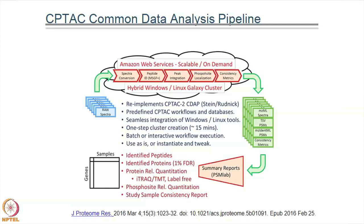This is the common data analysis pipeline we run. Every piece of data that comes into the CPTAC data portal goes through our Amazon-based, Galaxy-based infrastructure pipeline. This involves an MSGF search and a custom-built protein report summary generation. The output files include identified peptides, identified proteins, quantitation data, and a study sample consistency report which serves as a QC matrix.